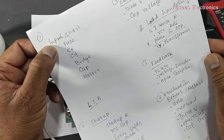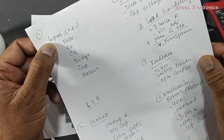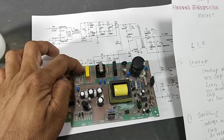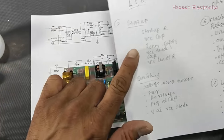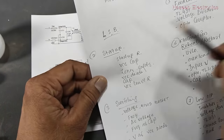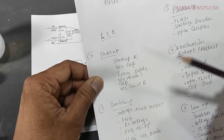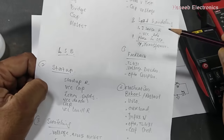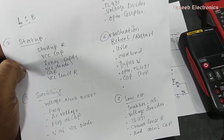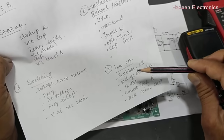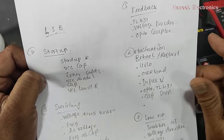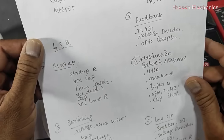Sometimes the input is short circuit, the fuse will burn out. The switching of this IC, the startup circuit, VCC circuit, output circuit, feedback fluctuation, low output voltage, and load handling problems.